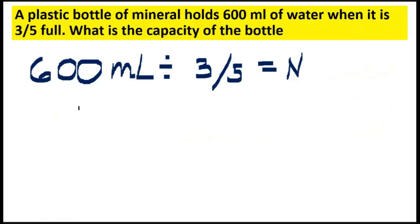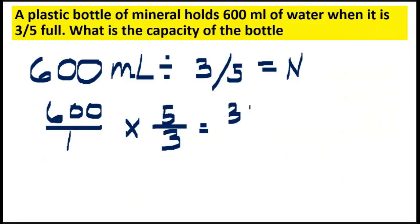Let's write our equation and then proceed to multiplication. 600 times five. Ang shortcut, six times five is 30, and then copy the two zeros. Ito, one, two. Then one times three is three. So, three thousand divided by three. Three divided by three is one, and then you just need to copy the three zeros.